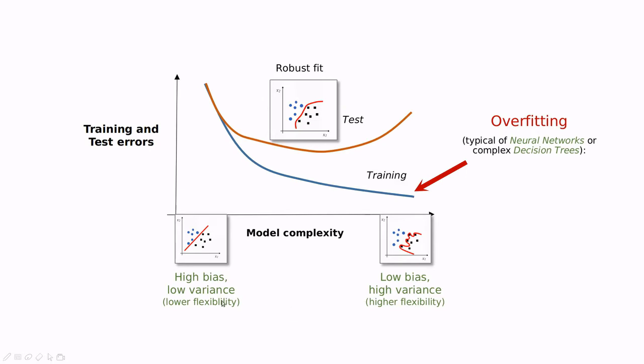We can summarize this in this plot. Here is the model complexity, and here we're discussing training and testing errors. If the model is too complex, the error in training is going to be very low, but the ability to generalize is also going to be low. And that's why with the testing data set, the error is going to perform poorly. This is called overfitting.